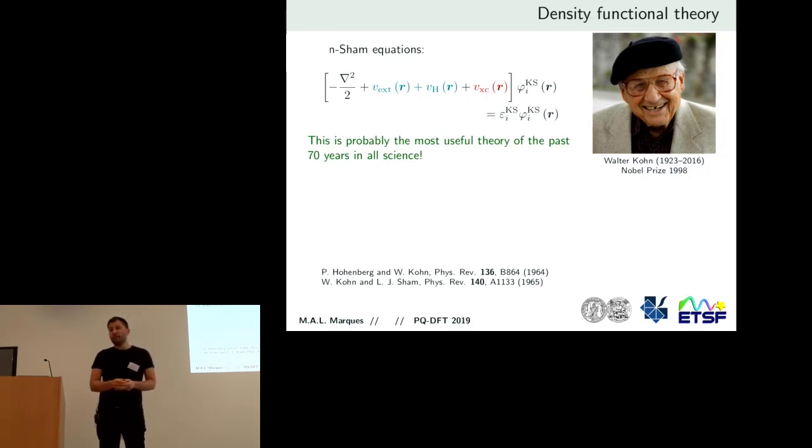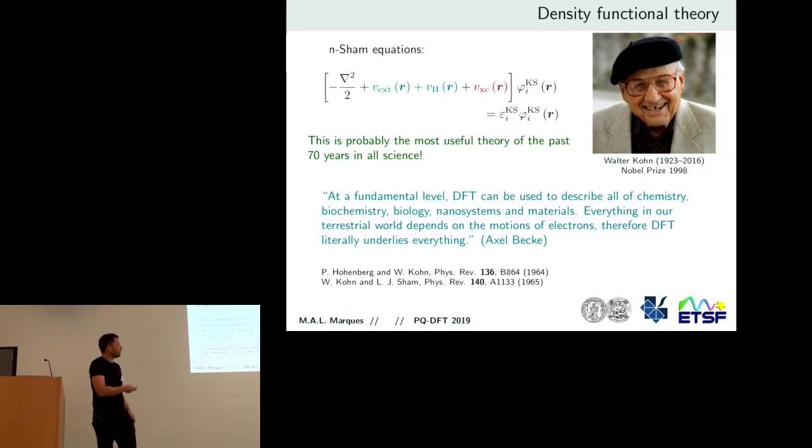This is probably the most useful theory in the past 70 years of all science. I think 15% of all papers are about DFT. It's very likely the most useful theory of all branches of science in the last 70 years. Why? Because this is a citation from Axel Becke that I actually like. It's a little bit politically incorrect, I would say. Because it says that DFT can be used to describe all chemistry, biochemistry, biology, nanosystems and materials. Everything on our terrestrial world depends on the motions of electrons. Therefore, DFT does everything, right?